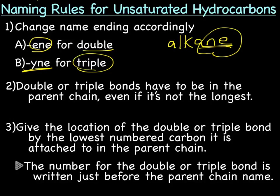Double or triple bonds have to be in the parent chain even if it's not the longest. Previously when we were naming alkanes, we looked for the longest continuous chain of carbons and identified that as the parent chain. For alkenes and alkynes, the double bond has to be in the parent chain. So this time we're looking for the longest chain possible that includes the double or triple bond.